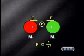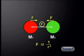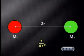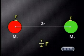So basically, as the distance between the particles increases, the force of gravity decreases. This decrease depends on the square of their distance apart. If the distance is doubled, the force decreases to one quarter of its original magnitude. This is an inverse square relationship.